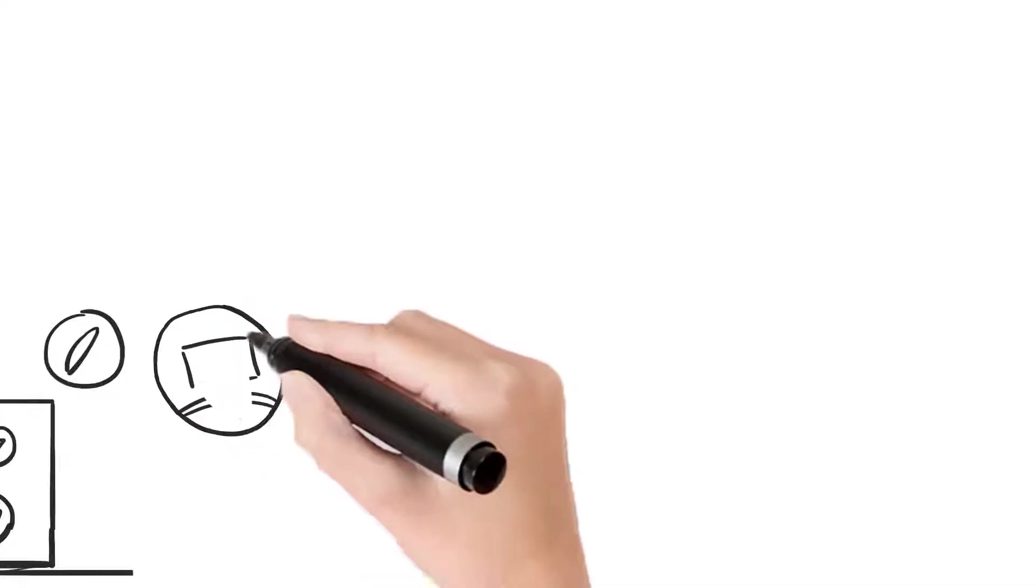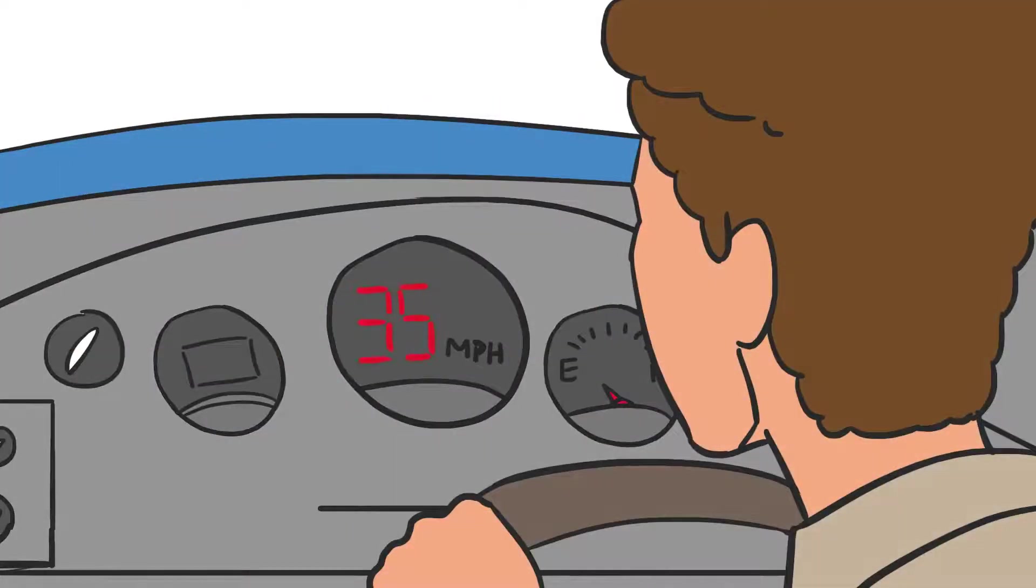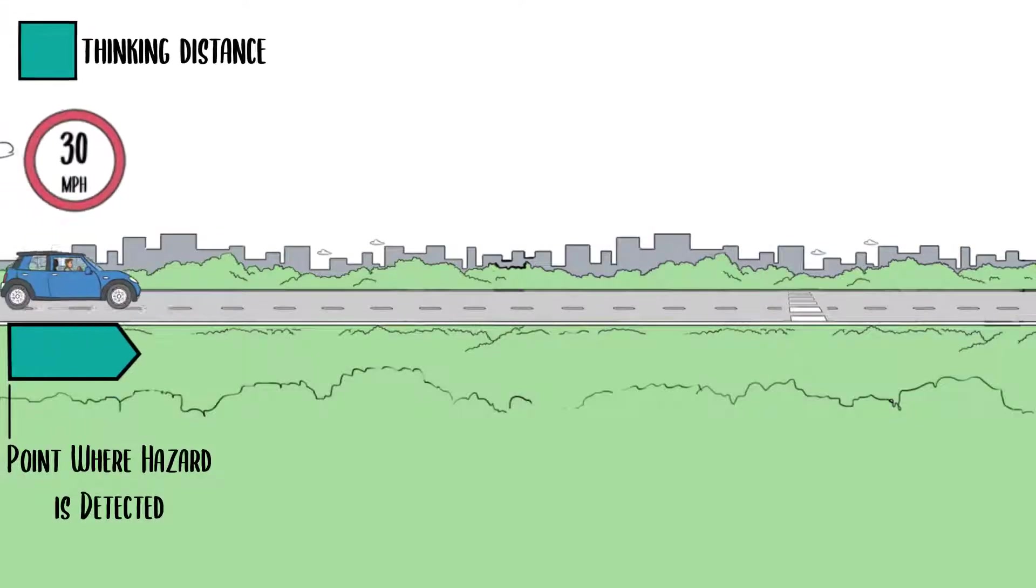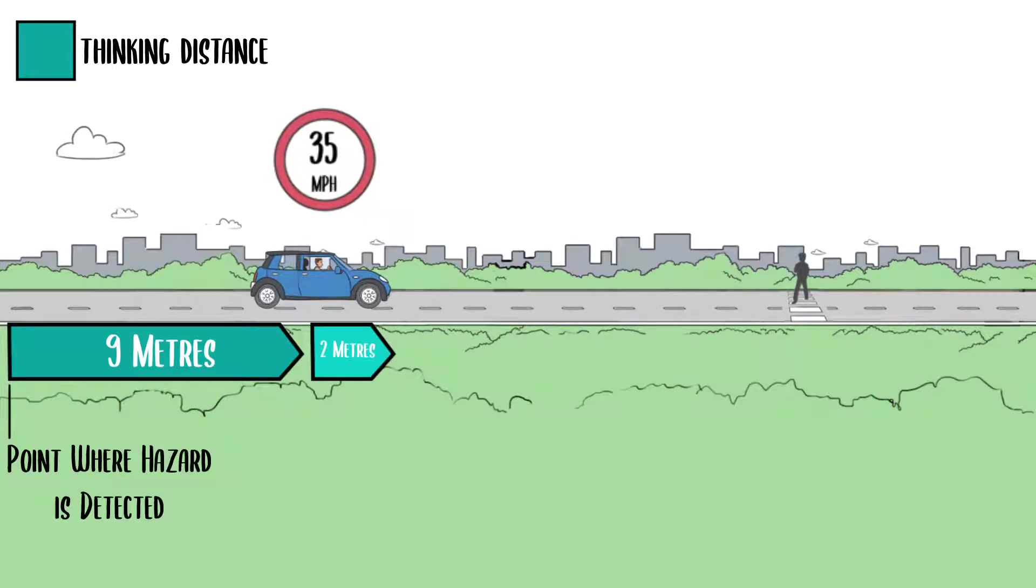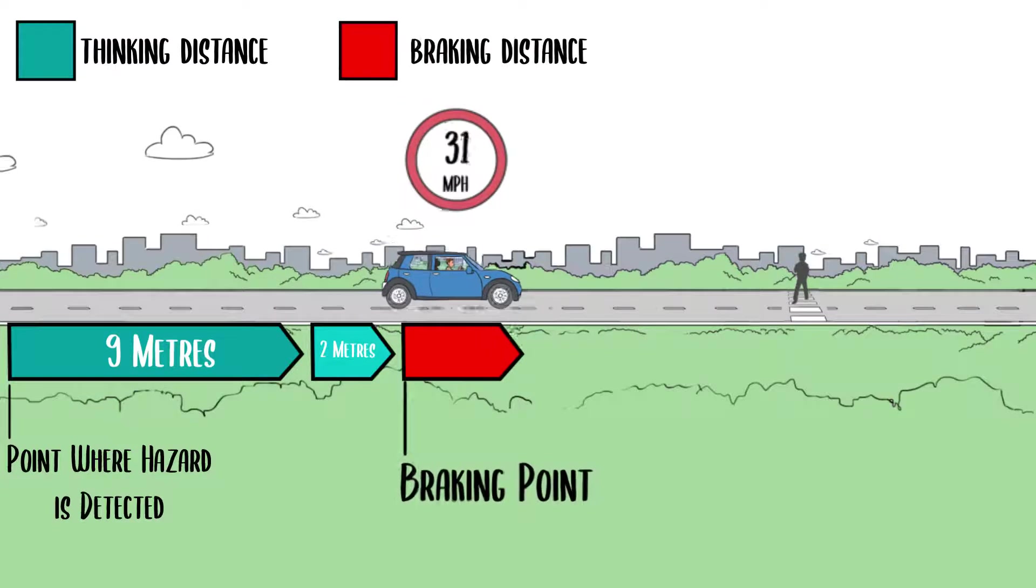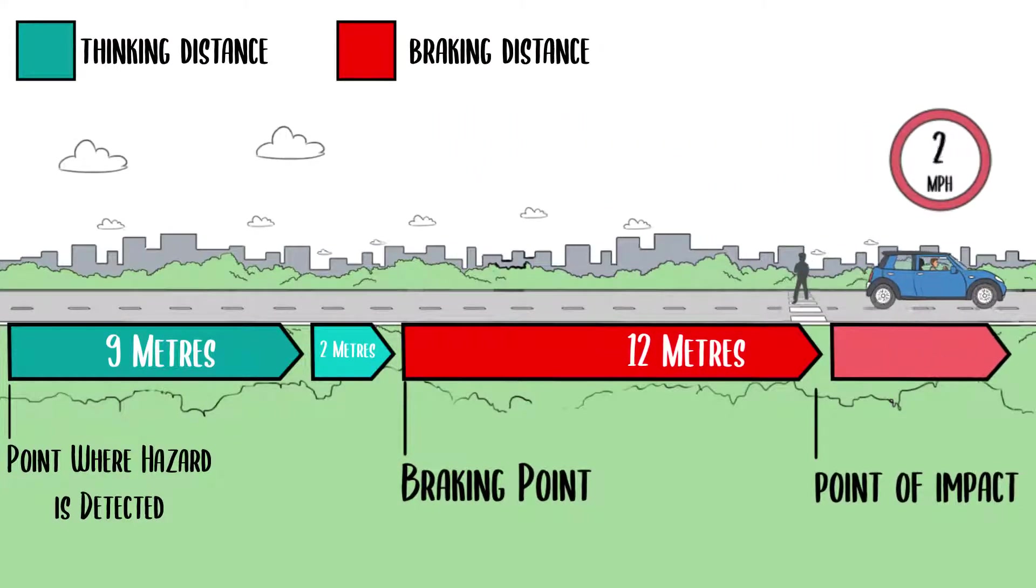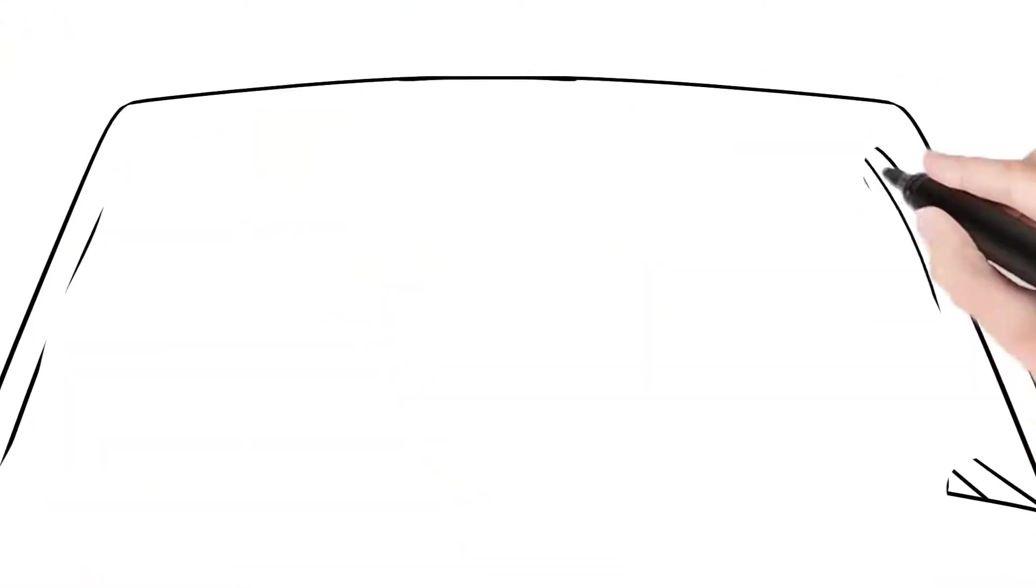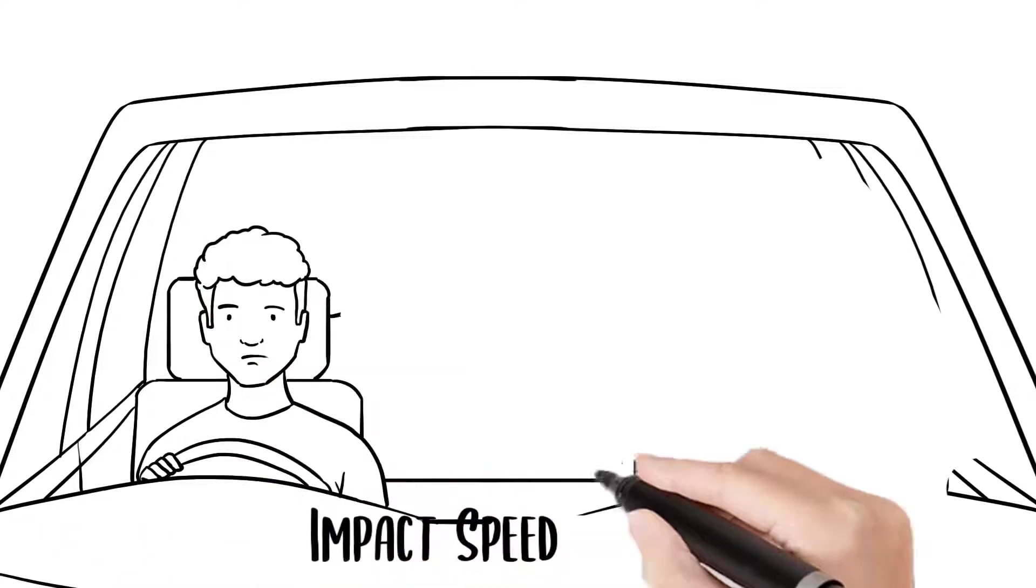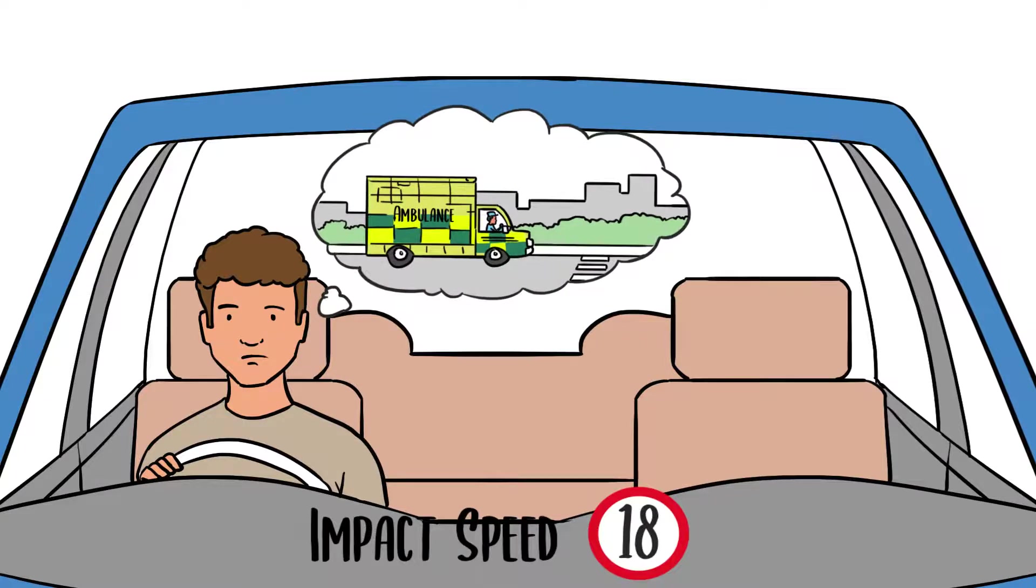Imagine the same scenario as before, except this time you're doing 35 miles per hour. Even with the same reaction time, your higher speed means your thinking distance is 2 metres longer. This means you now have only 12 metres to impact, but those extra 5 miles per hour mean you really need around 19 metres to brake to a stop. At the point when you hit the pedestrian, you're still doing around 18 miles per hour, enough to seriously injure or even kill them.